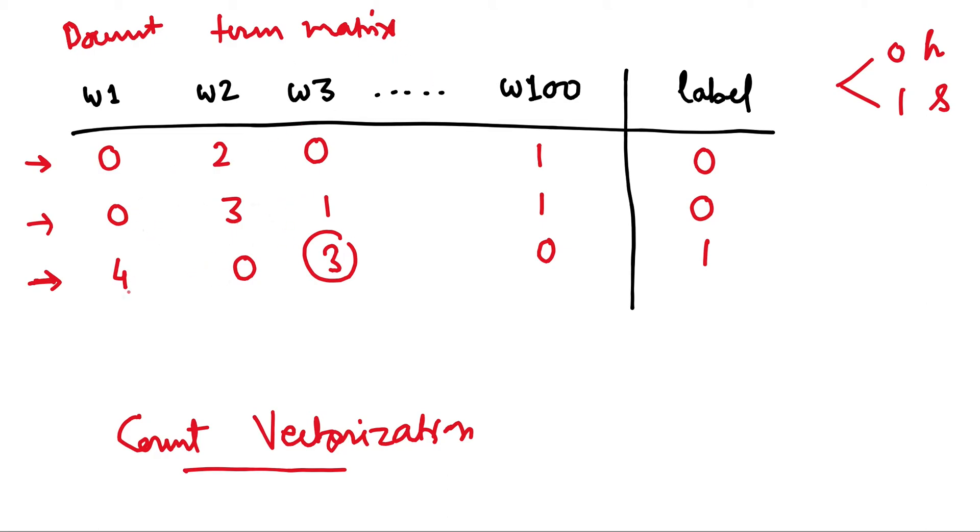So now you understand the concept of vectorization. So we can represent this first message by this vector of 100 dimensions. So this is a 100-dimension vector, and this is zero, two, zero, dot dot dot, one. Similarly for second sentence and similarly for third, and so on.